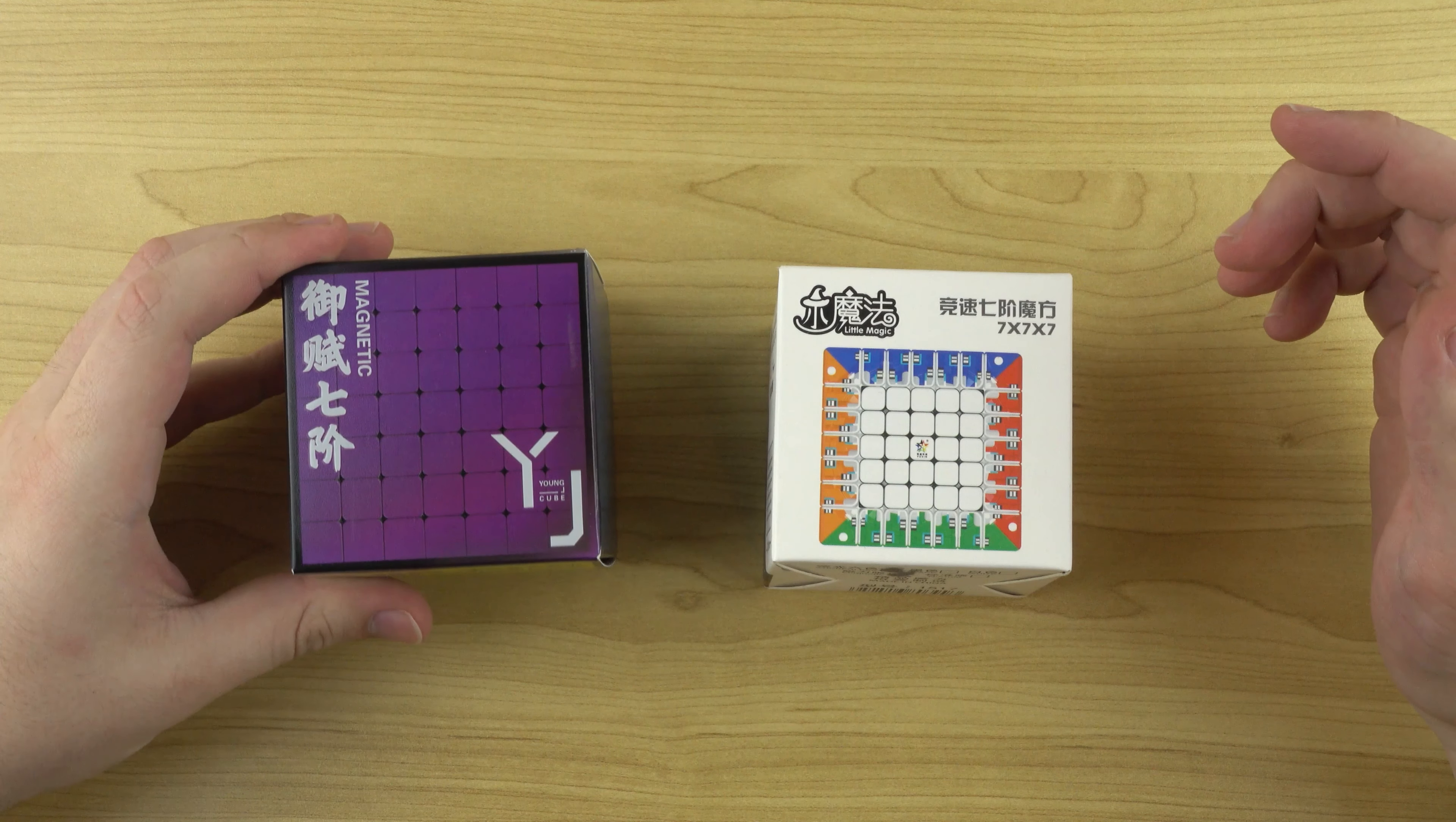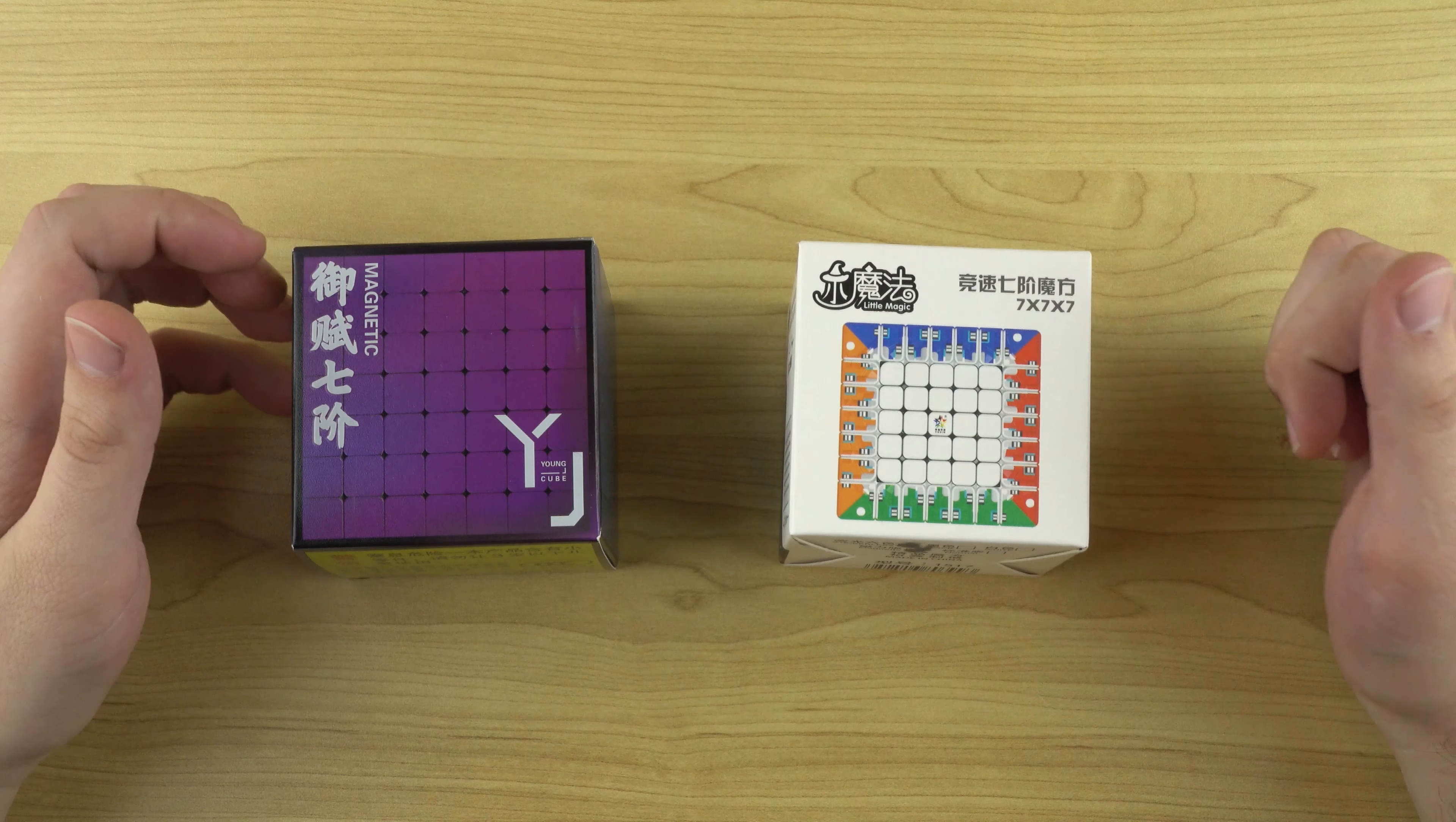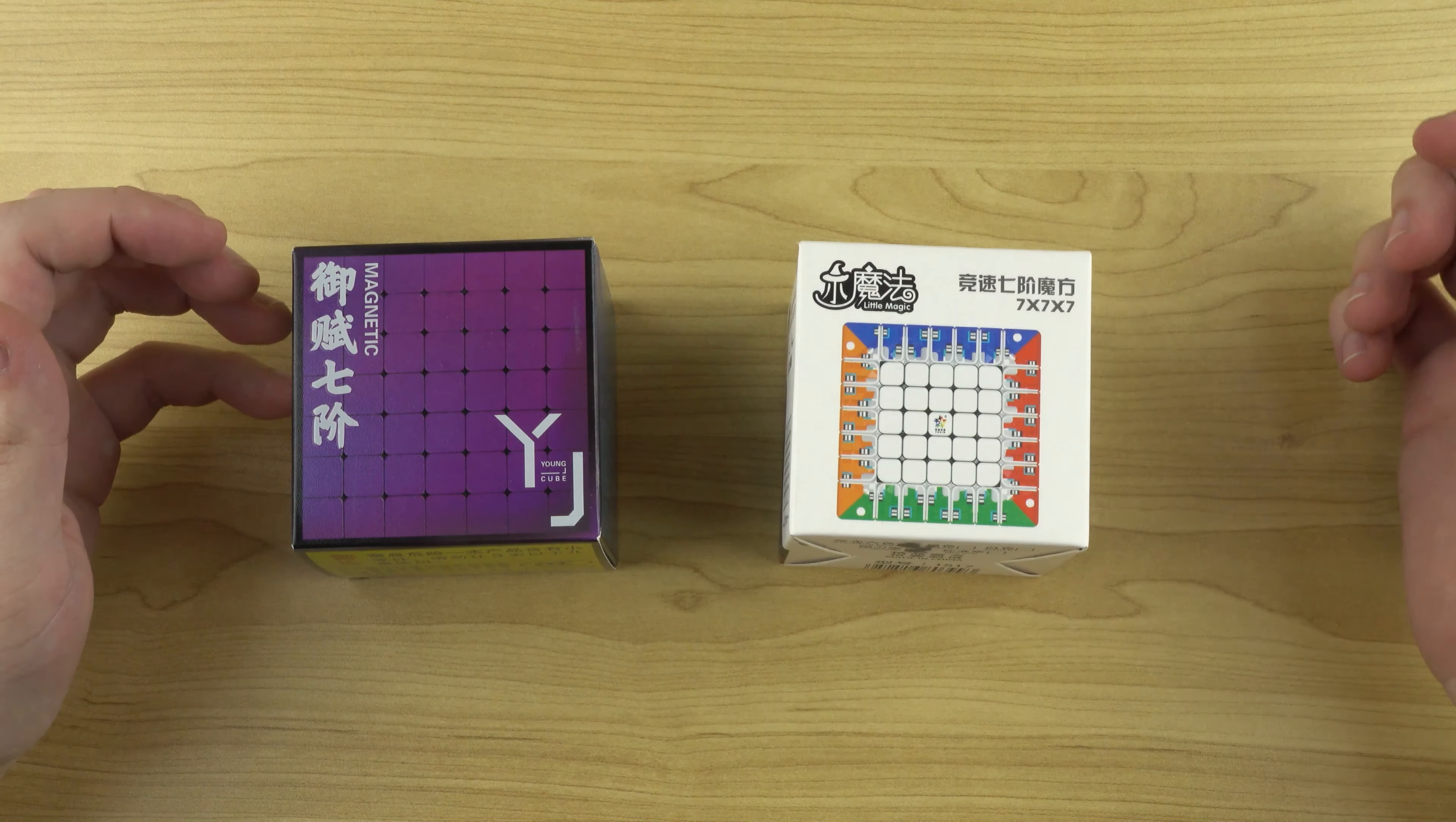So the YJ Yufu is $27.50 Australian and the Yuxin Little Magic on the right is $39.95 Australian. Now the reason that's important is because previously the cheapest magnetic options would be $75 to $85 Australian.